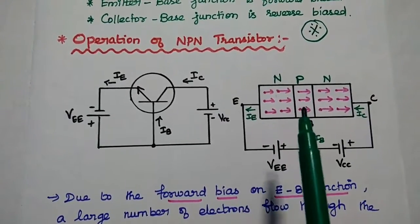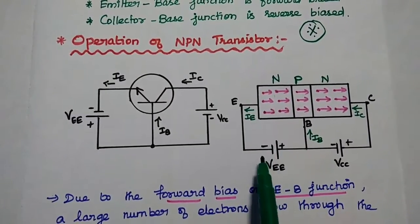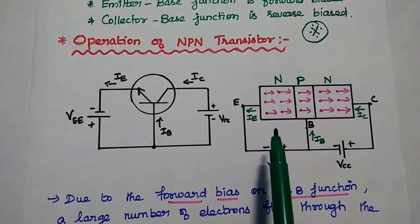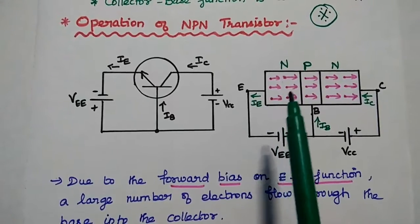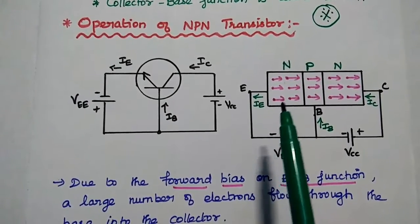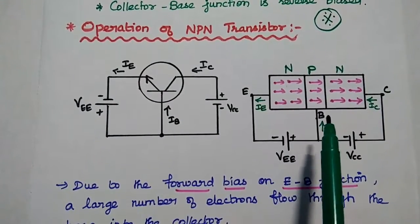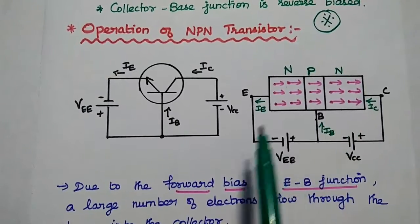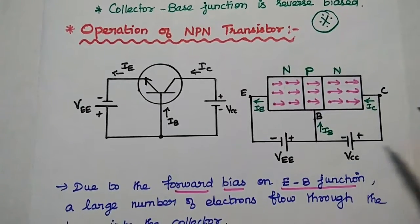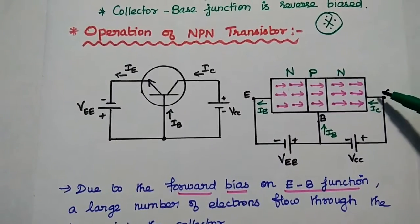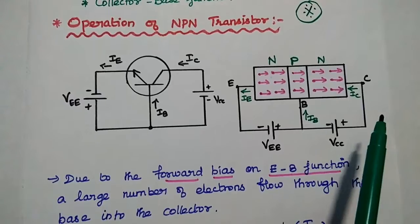Due to this forward bias, a large number of majority carriers — here majority carriers are electrons — are injected. Electrons are negative, and the negative terminal repels all these majority carriers. So a large number of majority carriers, that is electrons, are injected into the base region because of this forward bias. On the collector side, it is reverse biased, with the positive connected to the negative terminal, so we can transfer more electrons from emitter to collector.